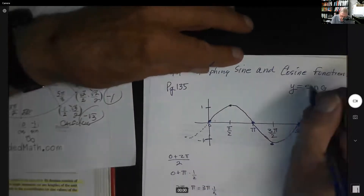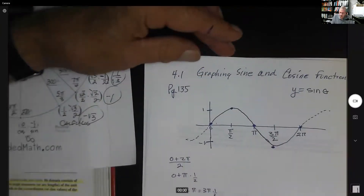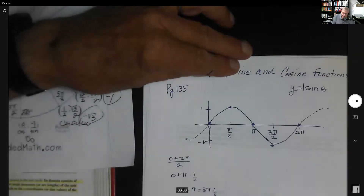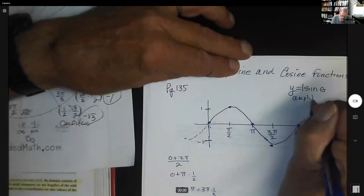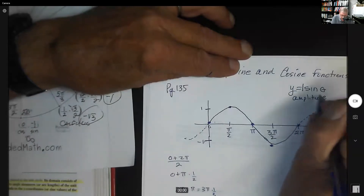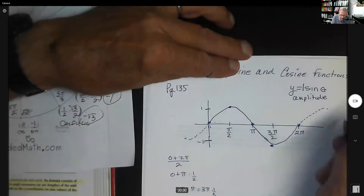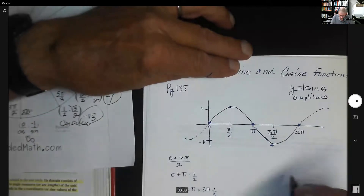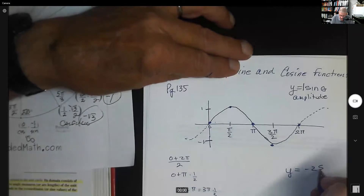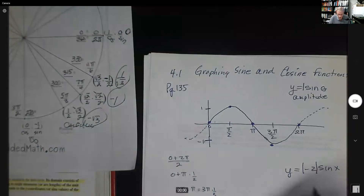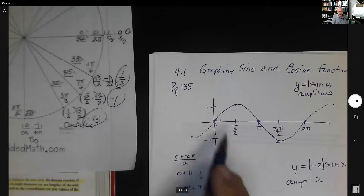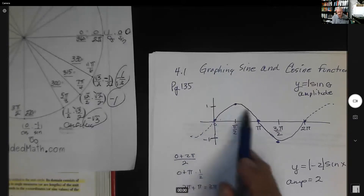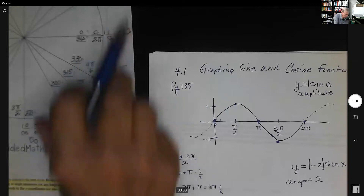If there's no number in front of sine, it's assumed to be one — that's the amplitude, which tells us how high the graph goes. We take the absolute value of that number. So for y equals negative 2 sine x, we take the absolute value of negative 2, which is 2, and the amplitude is 2 units.